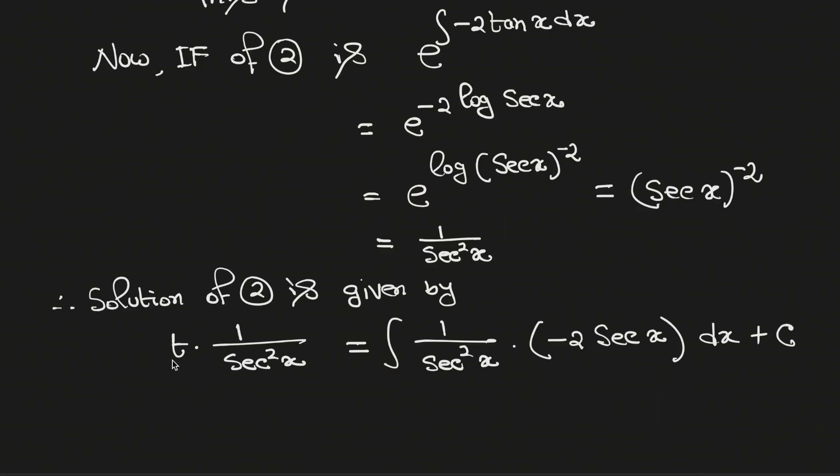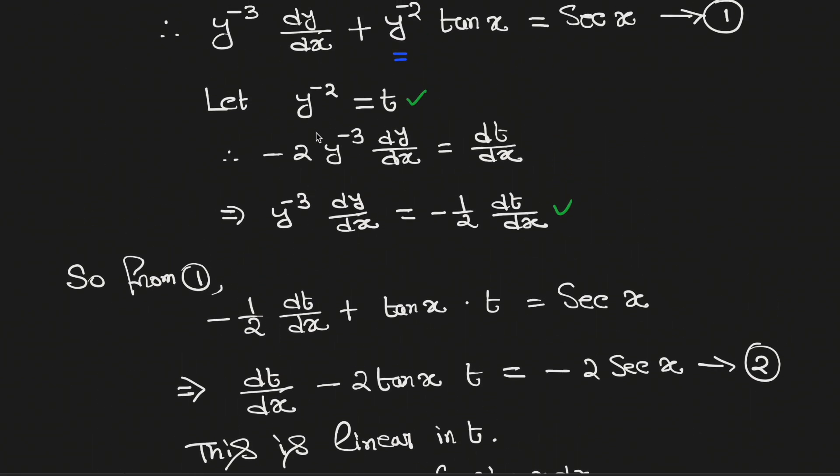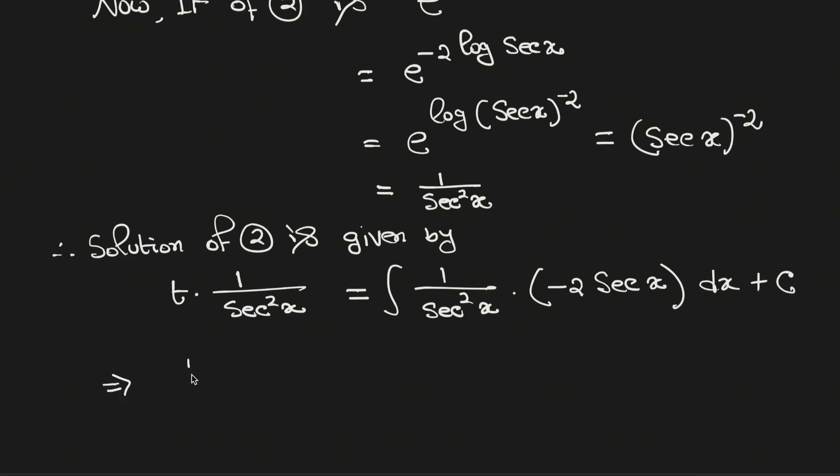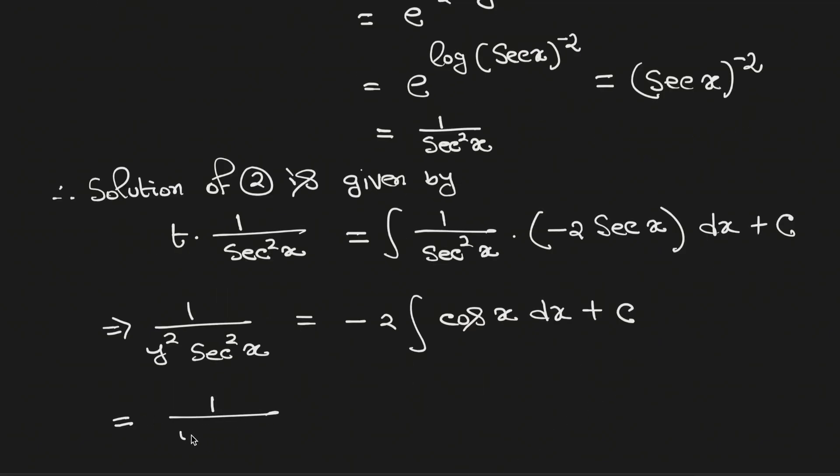Now recall the value of t. This can be written as 1 over y square sec square x equals negative 2 integration of cos x dx plus integration constant c. Simplifying we get 1 over y square sec square x equals negative 2 sin x plus integration constant c.